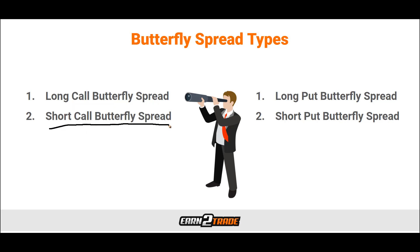Then we have the short call Butterfly Spread, which involves writing one in-the-money call option at a lower strike price, purchasing two at-the-money call options, and writing an out-of-the-money call option at a higher strike price. The key to this short butterfly strategy is purchasing the two at-the-money call options, with the receipt of income from the written options creating a net credit. If the asset price falls below the strike price, all options would be worthless on expiry and we would take the net credit as profit. Conversely, if the asset price rises above the higher strike price, the value of the two at-the-money call options would cover the two written options and more.